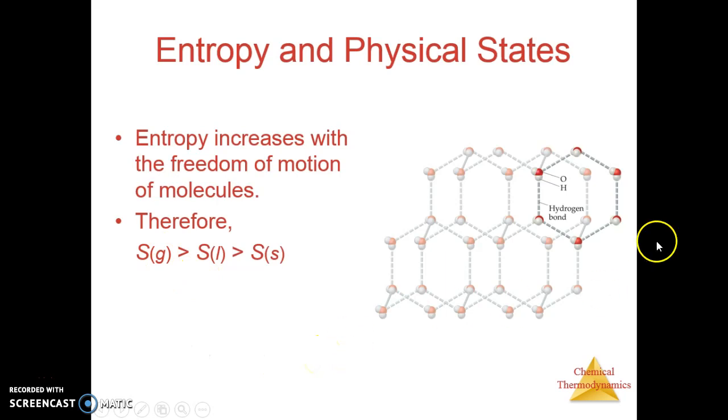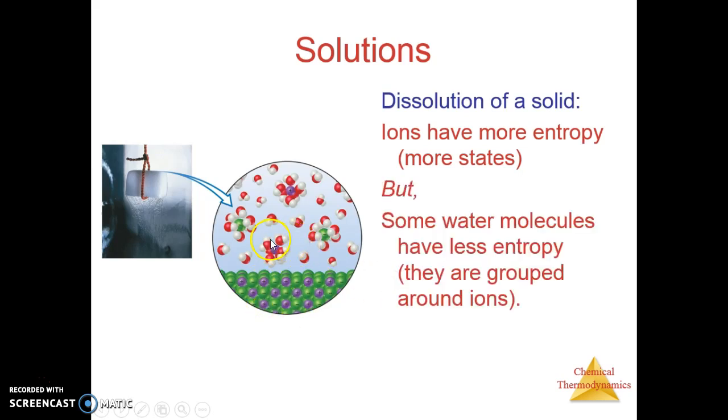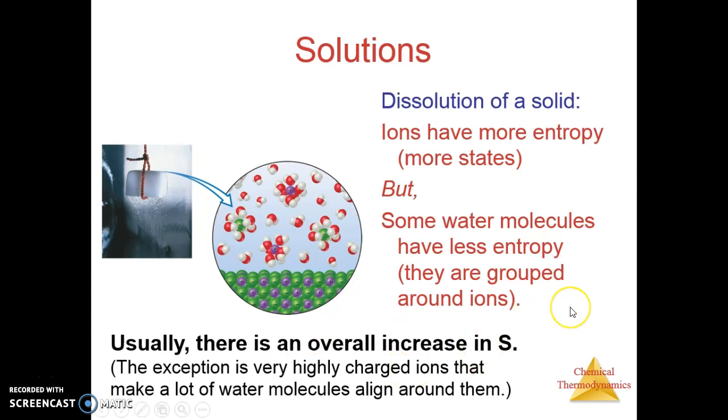You can also have entropy increase when you have more free motion. As you go from a solid to a liquid to a gas, you have more free motion. In a solid, all of the IMFs are present. You make a liquid, some of these IMFs are broken, so you have more motion. You make a gas, every one of these IMFs are broken. Taking a look at a solution, when you dissolve a solid, ions are going to have more entropy, more possible locations, as opposed to in the rigid structure of the crystal. But some water molecules actually lose entropy because they're attracted to that ion. Usually there's an overall increase in entropy. The exception is for very highly charged ions where they attract a whole lot of water molecules; you may actually have a decrease in entropy.